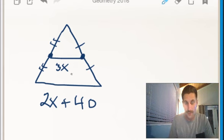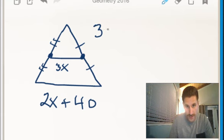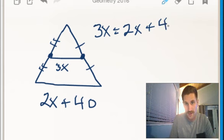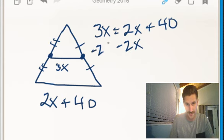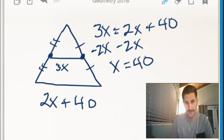So according to my rules, these are going to be congruent. So we'll just do 3x equals 2x plus 40. And we'll go ahead and subtract 2x on both sides. And that's going to leave me x equals 40. Okay? Pretty simple.